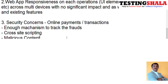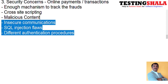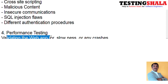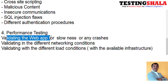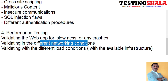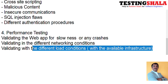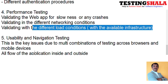The fourth challenge is performance testing. This is very crucial because the web application is completely designed based on UI elements, so we need to see how the application is behaving — how fast it is, whether there are any crashes from the back end or front end. We validate this by simulating various networking conditions such as 2G, 3G, 4G, 5G, WAN, and LAN. We also apply different types of load conditions to ensure the web application works properly with the available infrastructure.